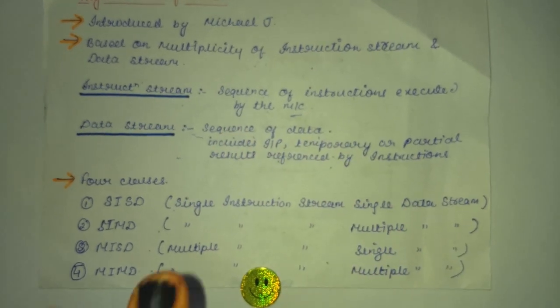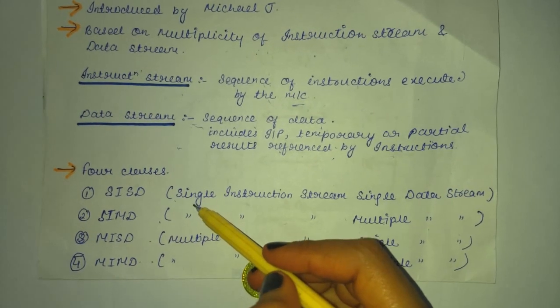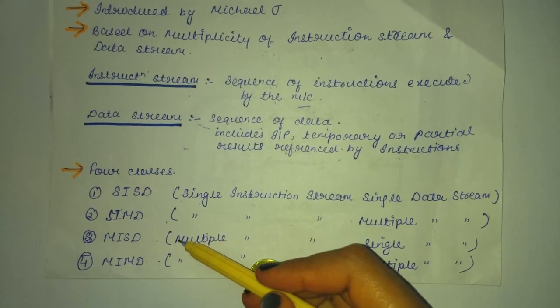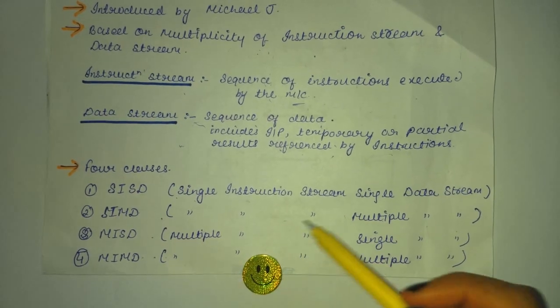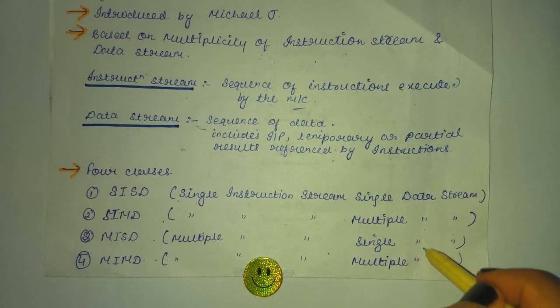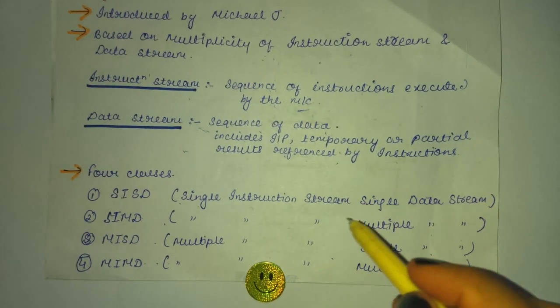Flynn has given four main classes. They are SISD, SIMD, MISD and MIMD. Their abbreviations are given over here. We will look to its detail forward.